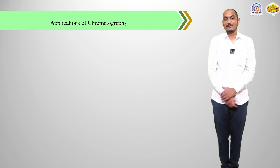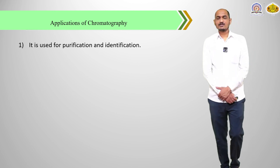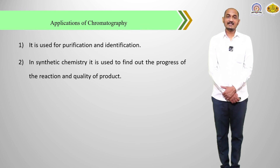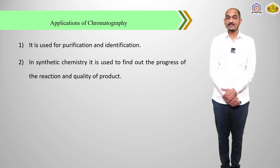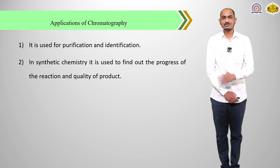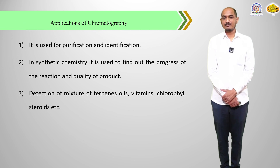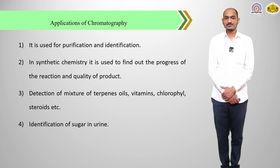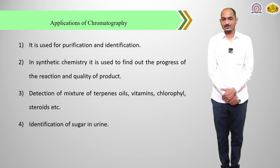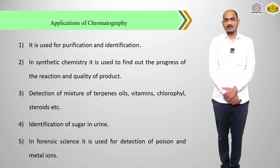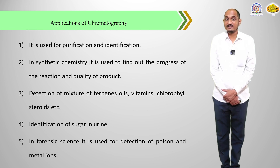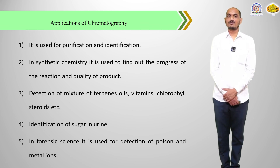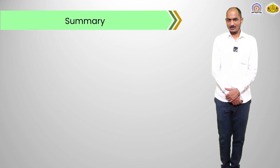The applications of chromatography: this technique is used for the purification and identification of different organic as well as inorganic compounds. In synthetic chemistry, it is used to find out the progress of a reaction and quality of the product — that is, for monitoring of a reaction. It is also useful for detection of mixtures of terpene oils, vitamins, chlorophyll, and steroids. Another important application is identification of sugar in urine. In forensic science, it is used for the detection of poisons and metal ions. These are all the important applications of chromatographic techniques.